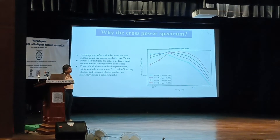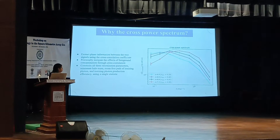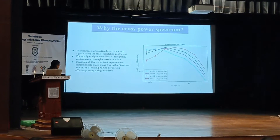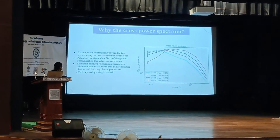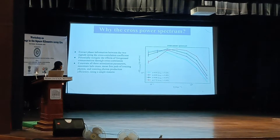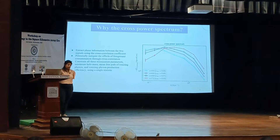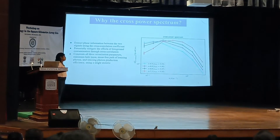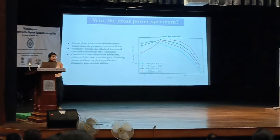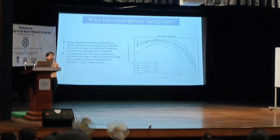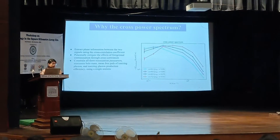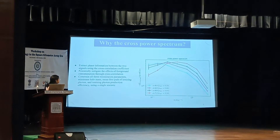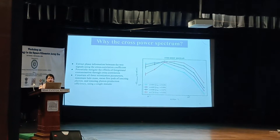The question is why do we like to use cross-power spectrum? This allows us to potentially mitigate the effects of foregrounds, and it also allows us to constrain all three ionization parameters: minimum halo mass, ionizing photon production efficiency, and mean free path of ionizing photons — which the CII signal does not allow by itself.